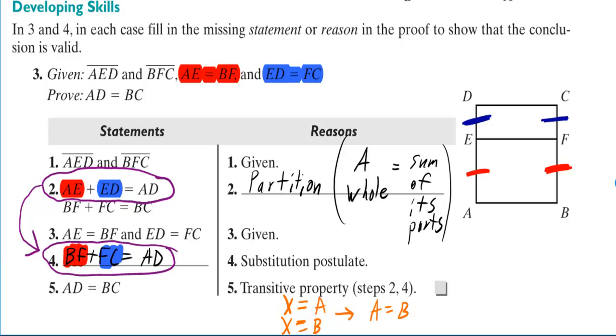But then how do we do it? Well, the transitive property can be written in terms of equations as: if X is equal to A and X is equal to B, then A is equal to B, well, since they're both equal to X, right?